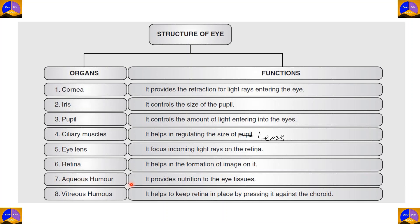The aqueous humour, which is present between the crystalline lens and the cornea, provides nutrition to the eye tissues of the cornea and the sclera. While the vitreous humour helps to keep the retina in place by pressing it against the choroid of the eye. Therefore, it helps in stabilising the parts of the eye.